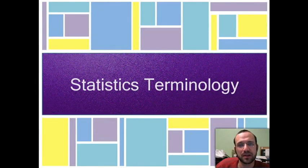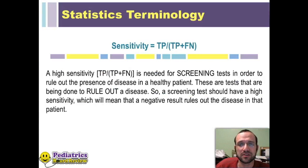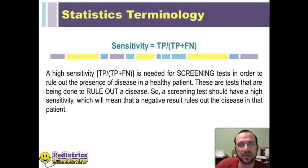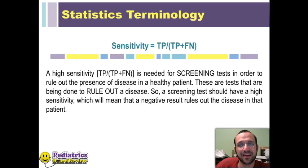Now we'll go through the specific terminology from the table and how to look at each individually. Sensitivity is defined as your true positives divided by the sum of your true positives and your false negatives. Sensitivity is what you look for in a good screening test — you are trying to rule out the presence of the disease in a patient who does not have it.